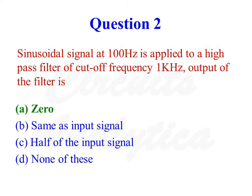Sinusoidal signal at 100 Hz is applied to a high-pass filter of cut-off frequency 1 kHz. Output of the filter is 0. Answer is option number 1. The cut-off frequency of the high-pass filter is 1 kHz. That means this filter will reject all frequencies less than 1 kHz. So 100 Hz is much lower than the cut-off frequency. So output of the filter is almost equal to 0.